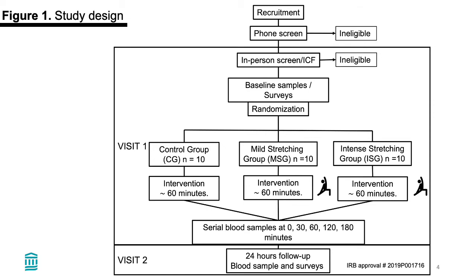Our three-arm RCT recruited healthy adults between 40 and 60 years old, non-smoking, and with a BMI between 19 and 29. Those that were eligible were scheduled for two consecutive study visits. During visit one, after baseline samples and surveys, we randomized participants into three groups: a mild stretching group, an intense stretching group, and a control group.